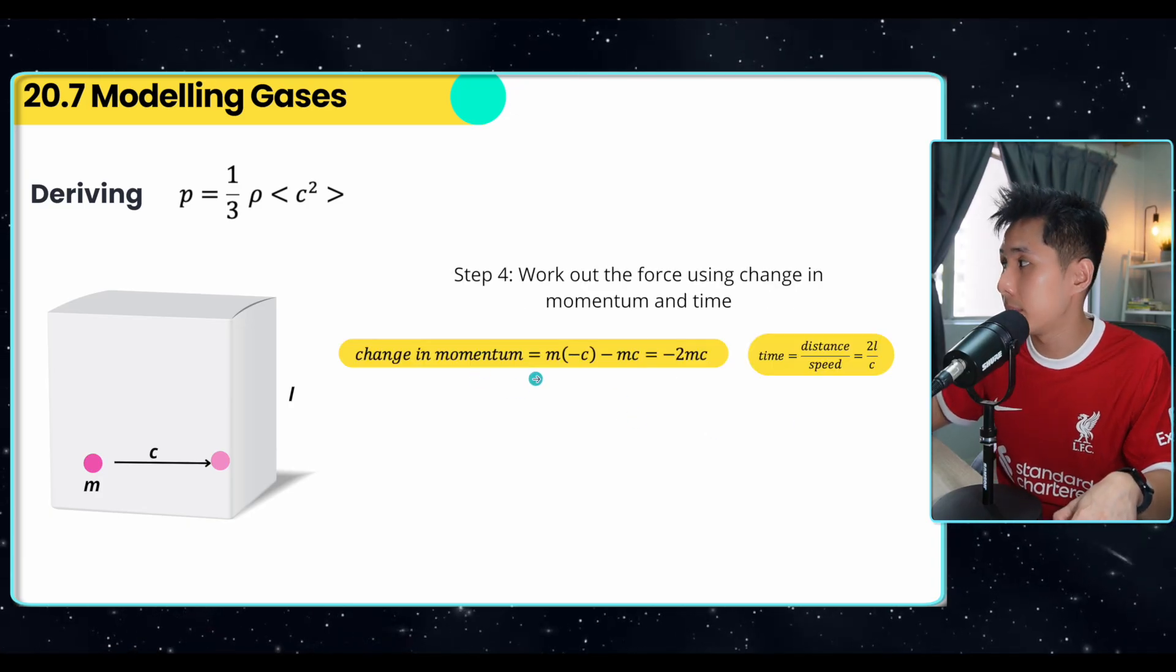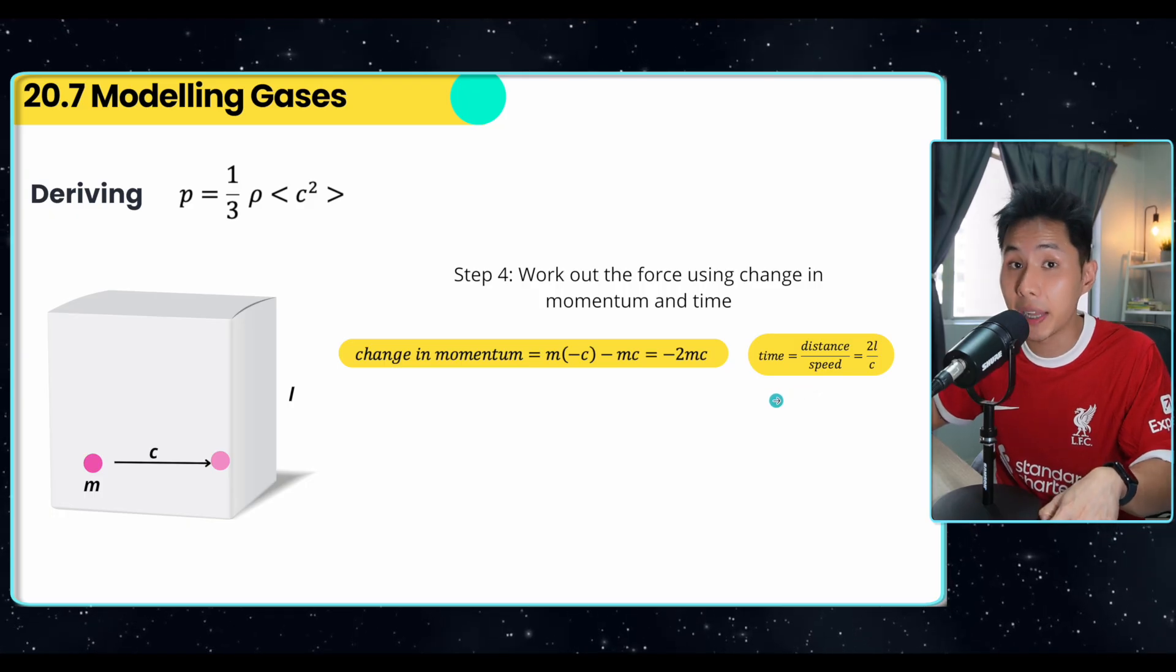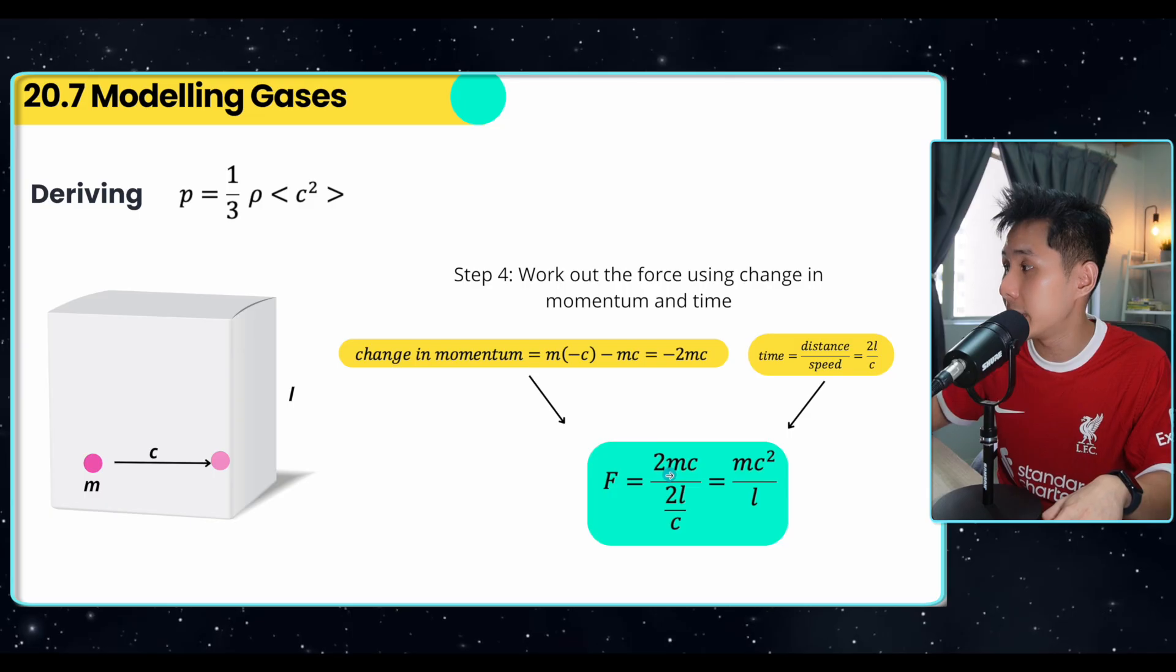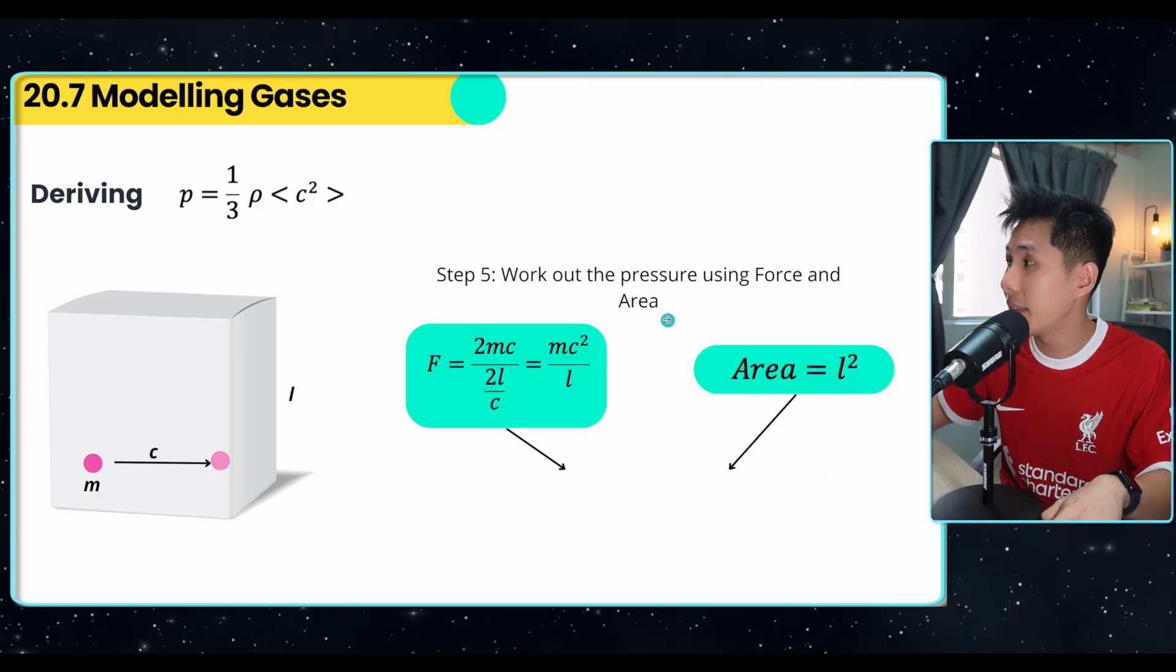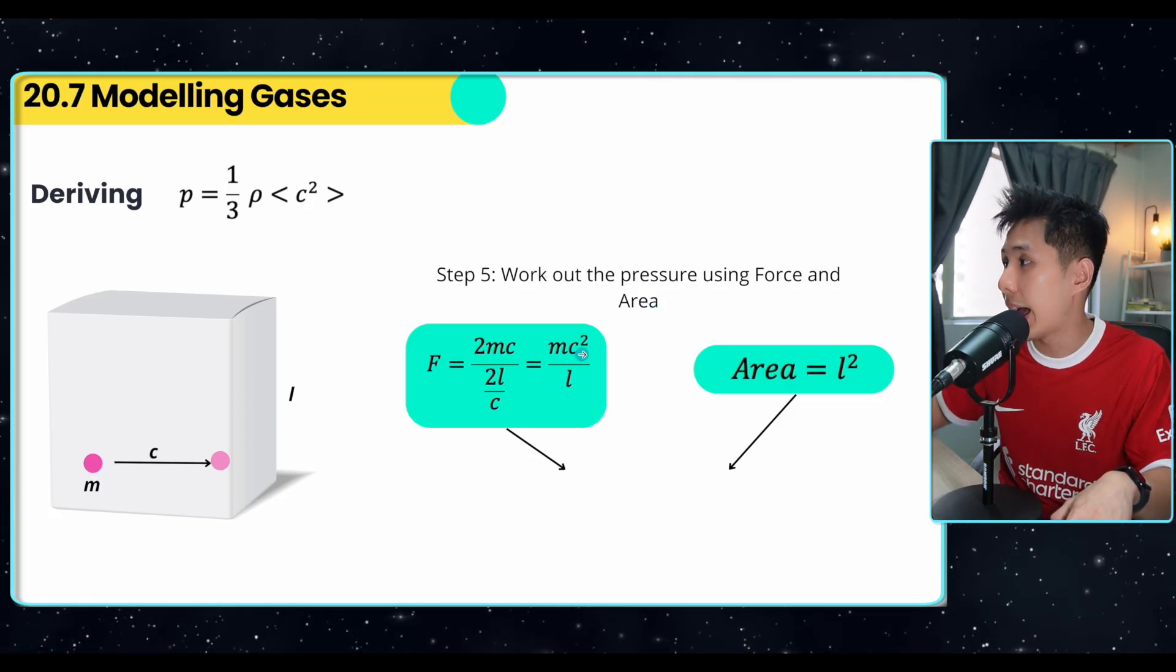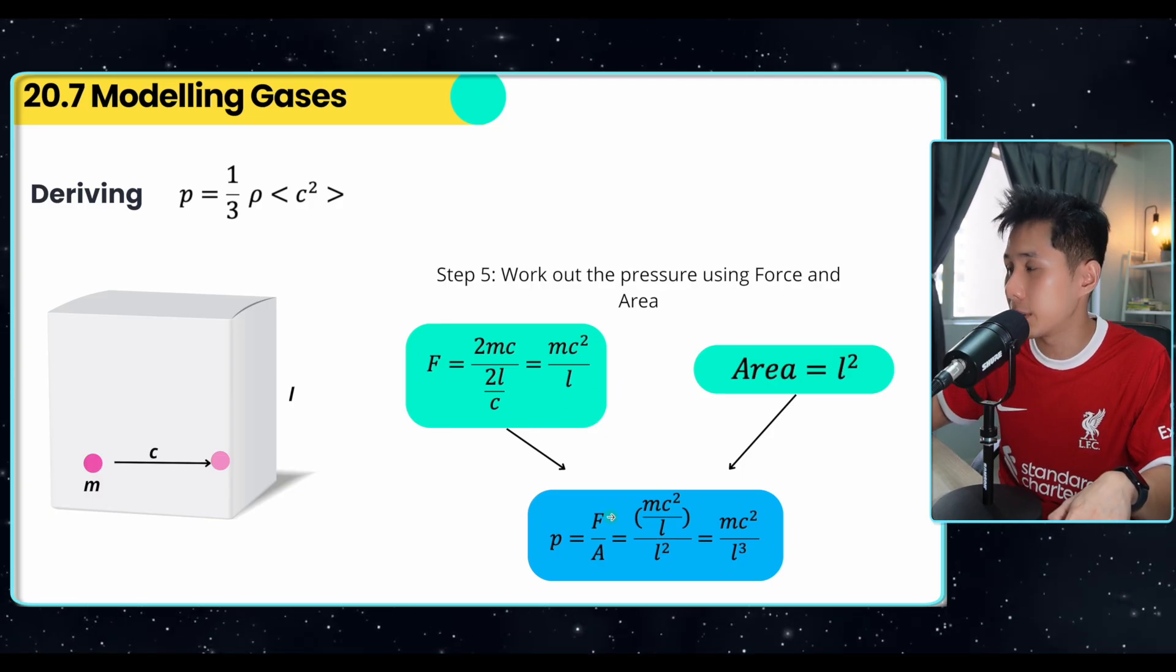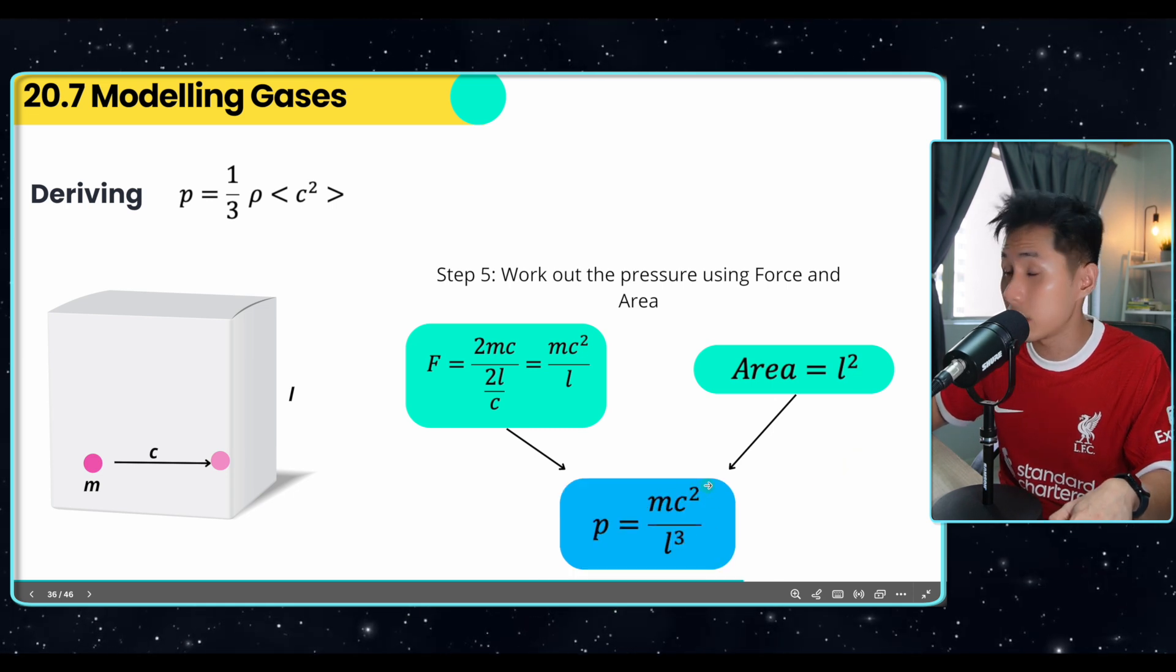And with that change in momentum and time, we can figure out the amount of force that the particle exerted on the wall. So I just combined the two equations together, 2mc divided by 2L over c, which will give me this quantity. And then using the force with the area, which is L square, I can figure out the pressure. So you can see step by step, pressure equal to force over area, use this, divide by this, you'll get this. So that's the pressure.